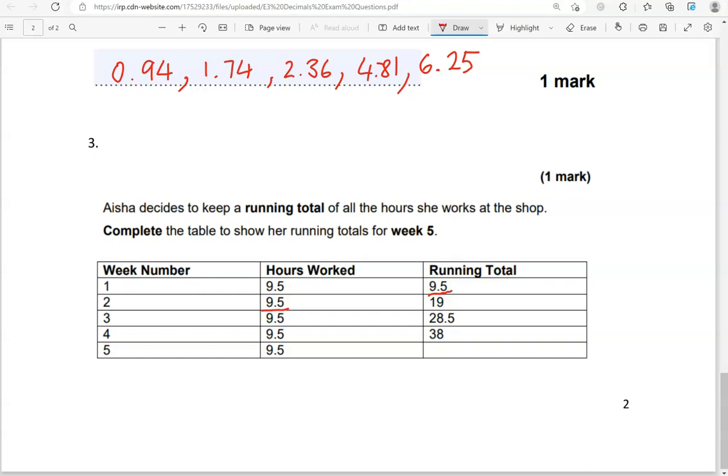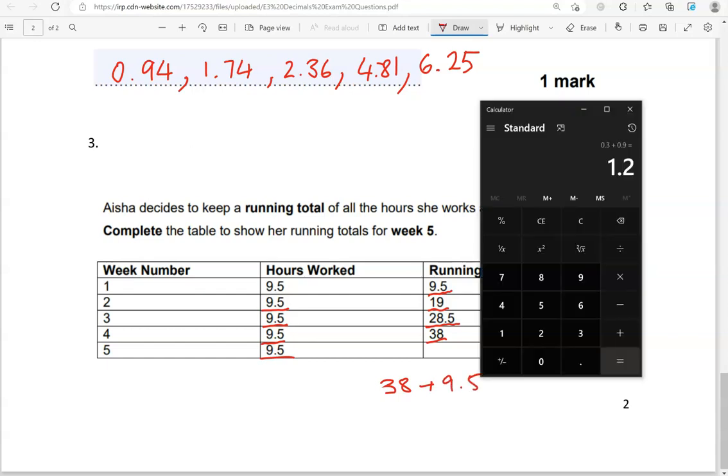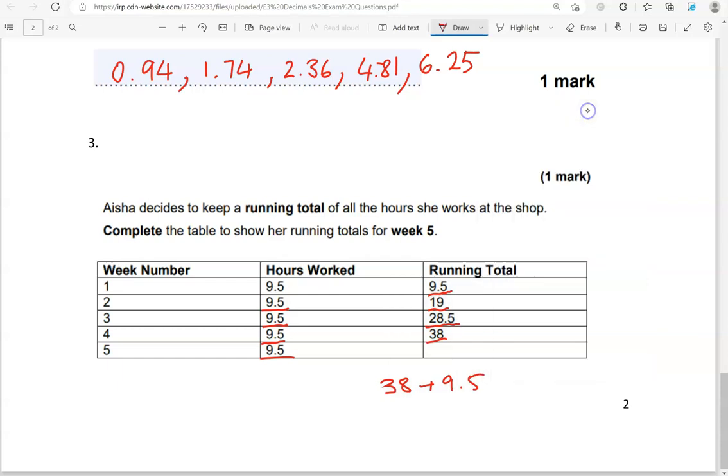Then, week 3, we've got 28.5 running total, which is made of 19 at 9.5. Week 4, the running total is 38 and that's made of 28.5 at 9.5. Now, we're looking for the running total at the end of week 5. And the way we're going to do that is by going 38 at 9.5. And we can use a calculator for that. So, 38 at 9.5 gives us 47.5.